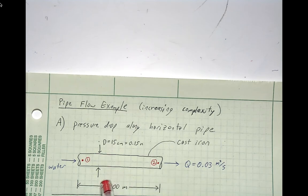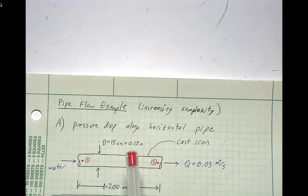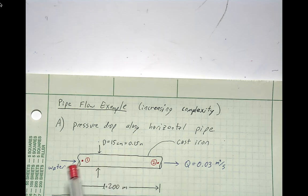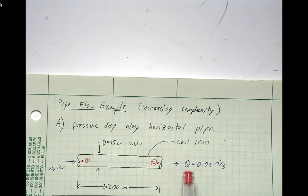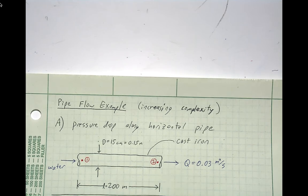The dimensions are given as a 15 centimeter diameter pipe with a length of 200 meters. It's much longer so that we know that we're fully developed for at least most of this. We have water as our fluid, and the volumetric flow rate is given as 0.03 meters cubed per second.